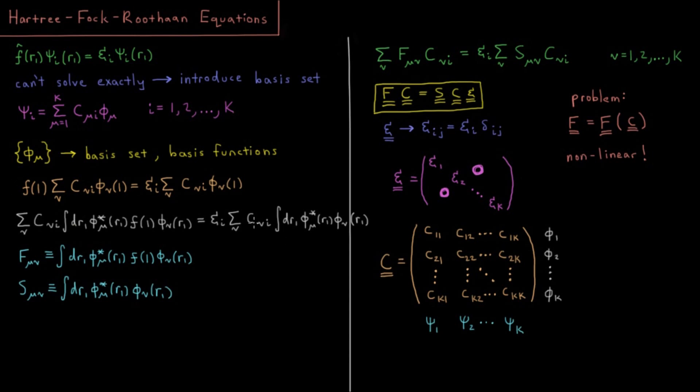If we do that left multiplication and integration on both sides, then what we end up with is the following sum: sum over nu C nu i integral over dr1, which is dx1, dy1, dz1 from negative infinity to infinity each, phi mu star F phi nu equaling epsilon i sum over nu C nu i integral phi mu star phi nu. What we have on the left-hand side is an integral which is an expectation value of the Fock operator. On the right-hand side, we have what looks like an overlap integral between two basis functions.